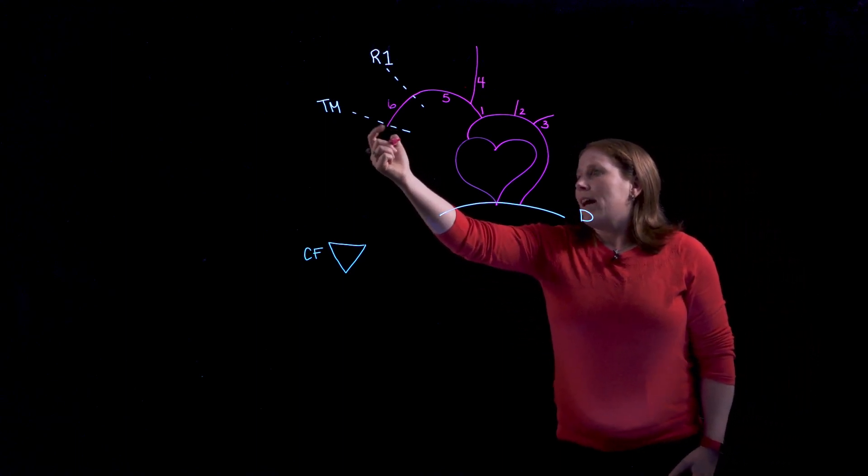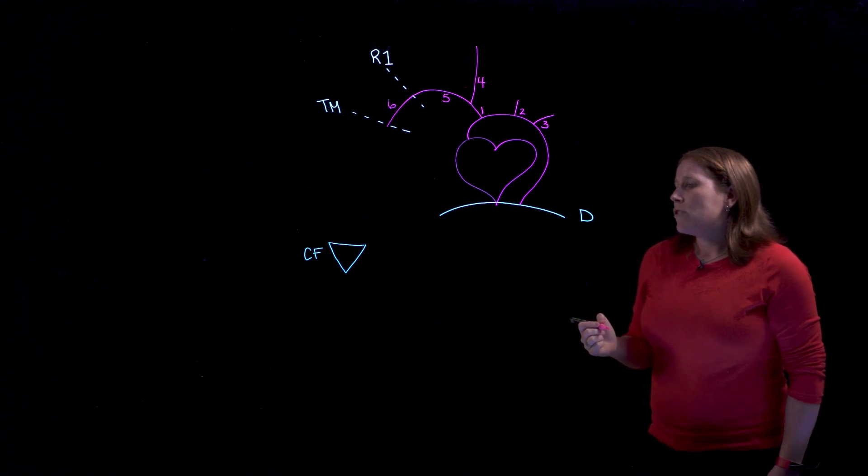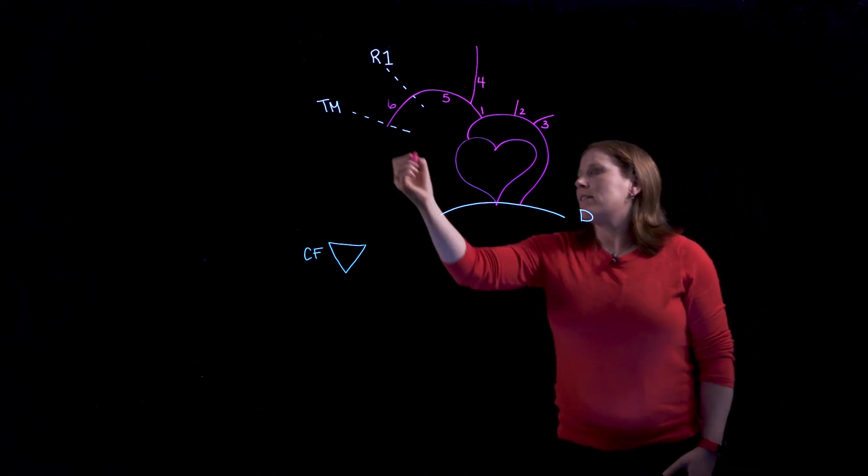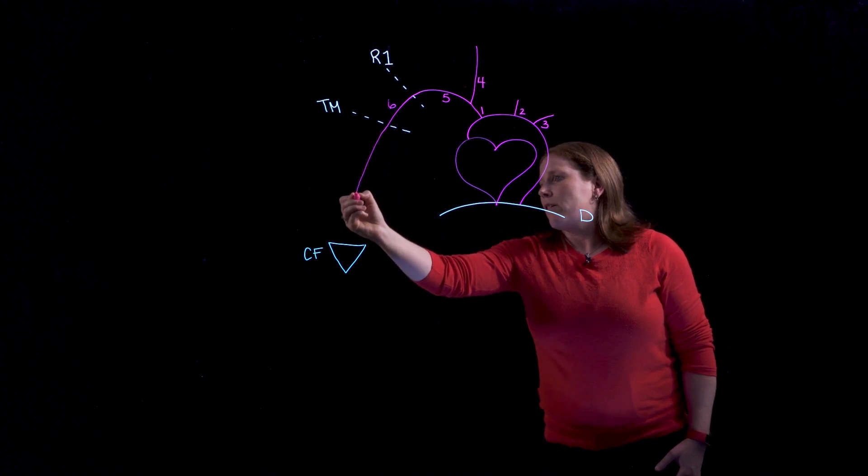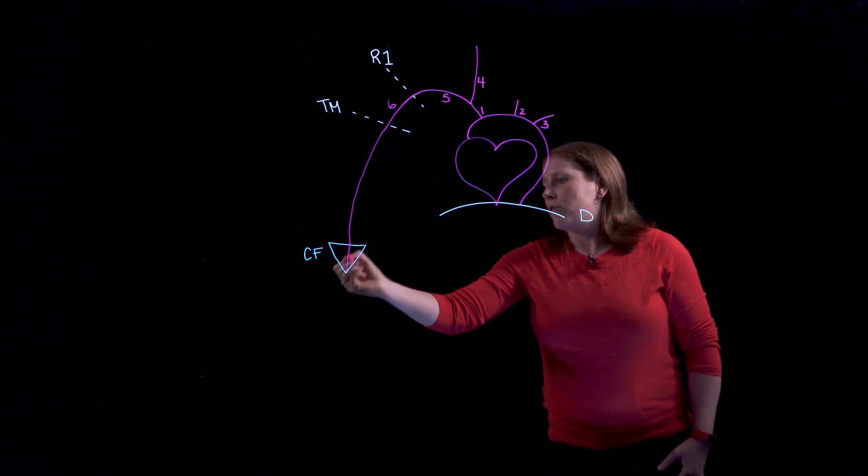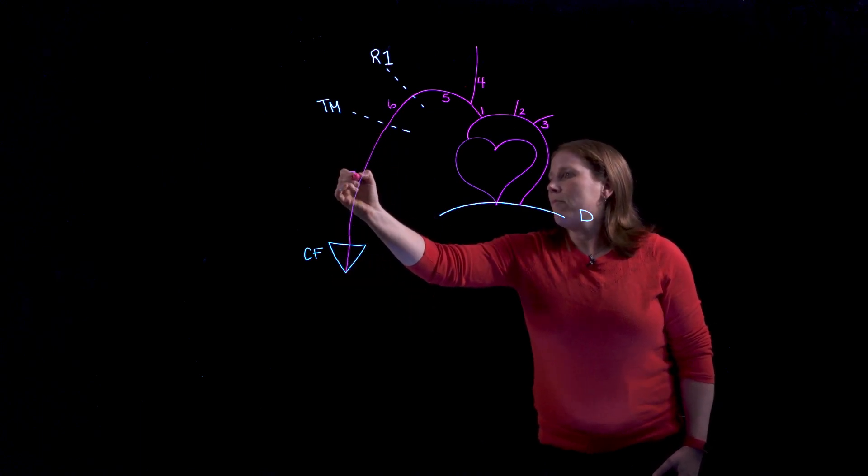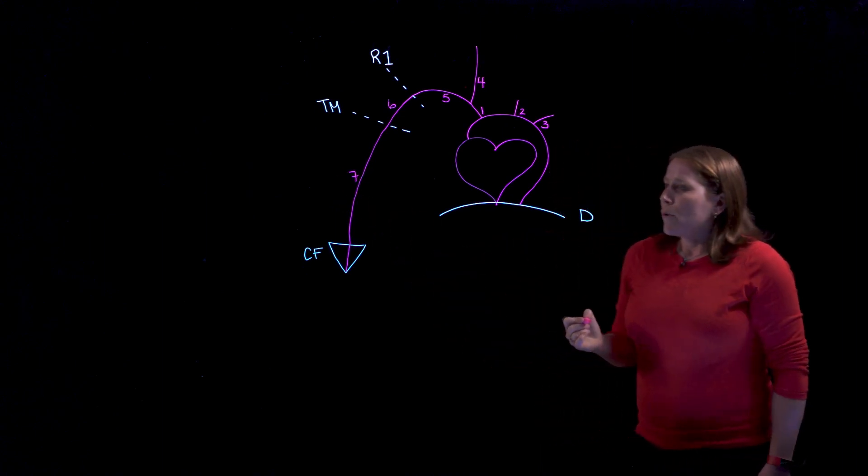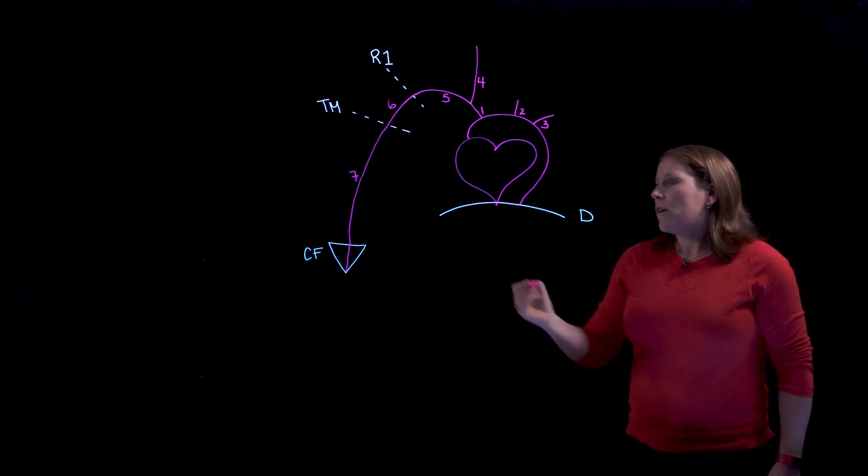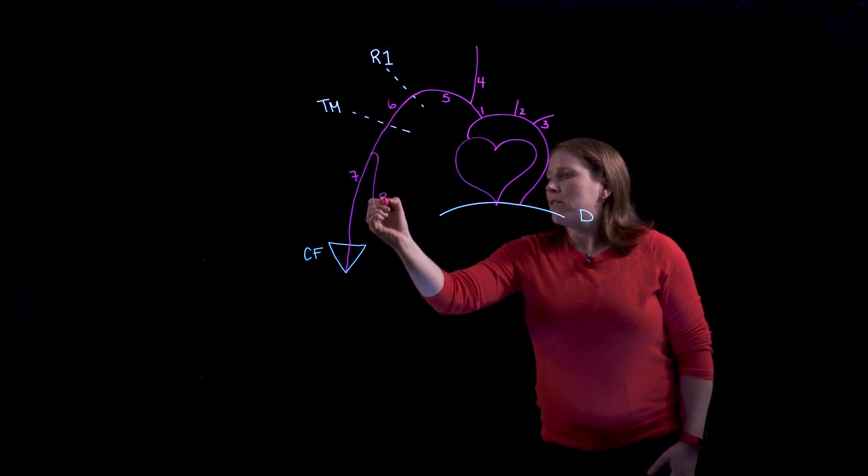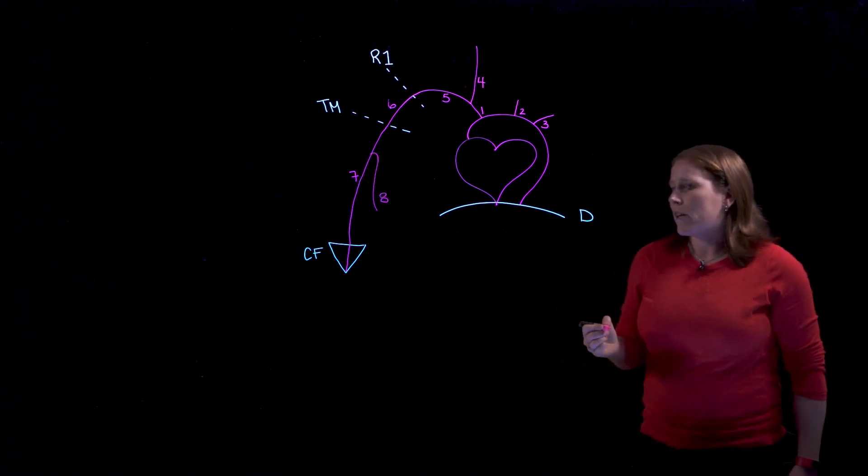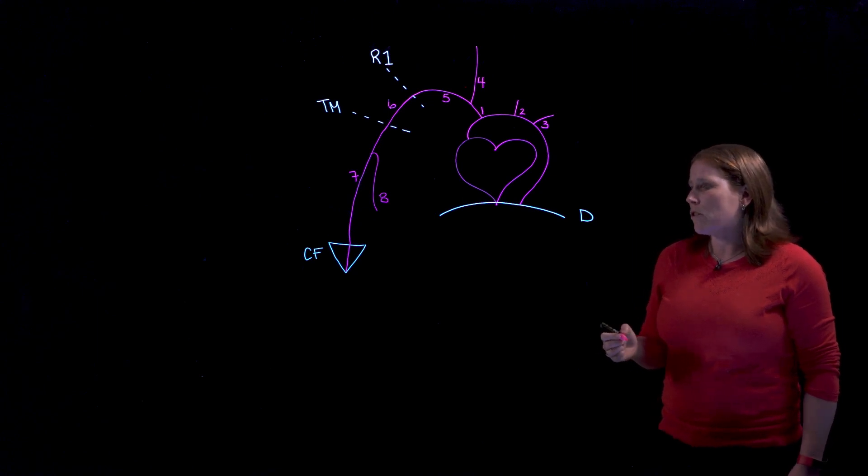As soon as we exit the axilla at the lower border of teres major this artery changes names again and now becomes the brachial artery and it will continue to be the brachial artery until it reaches the cubital fossa. The brachial artery has one major branch in the arm so we'll draw that here and this is called the profunda brachii artery or the deep branch of the brachial artery.